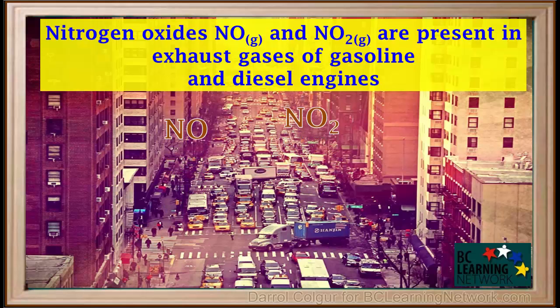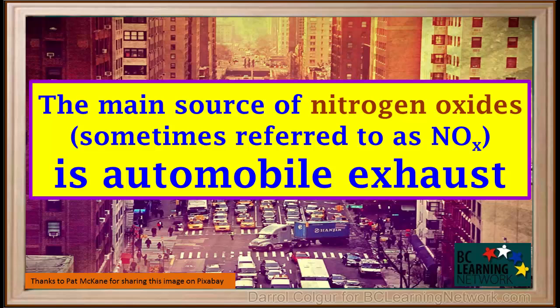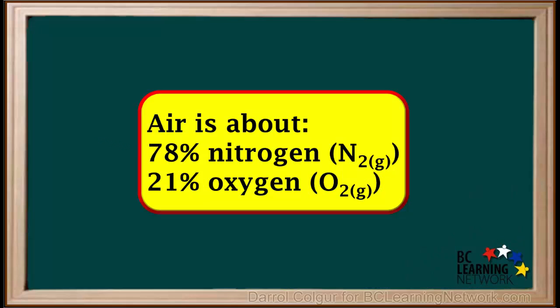Nitrogen oxides NO and NO2 are present in exhaust gases of internal combustion engines that run on gasoline or diesel fuel. So the main source of nitrogen oxides, sometimes collectively referred to as NOx, is automobile exhaust. Air is about 78% nitrogen and about 21% oxygen. Air forms part of the mixture injected into the cylinders of an internal combustion engine.